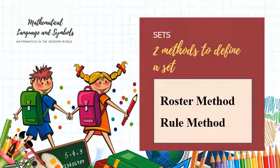There are two methods to define a set: roster method and rule method. We will go through them one by one, but for this part of the series, we will cover the roster method only.